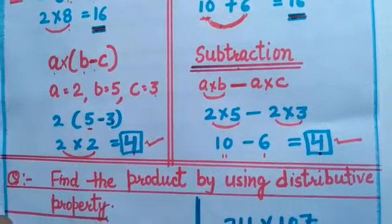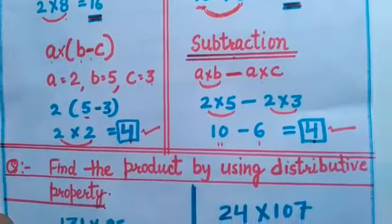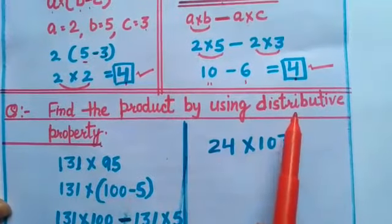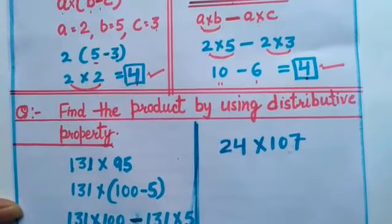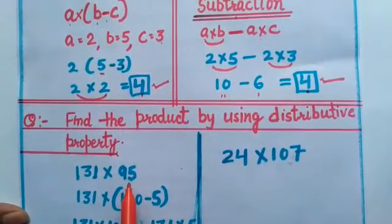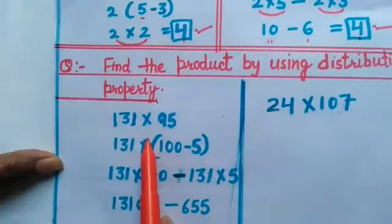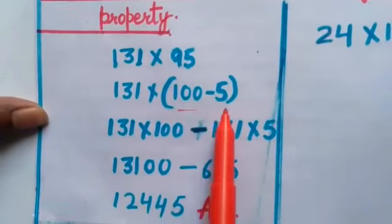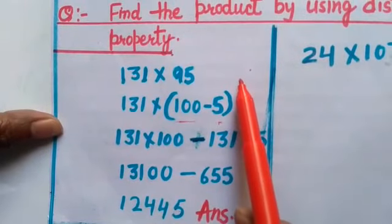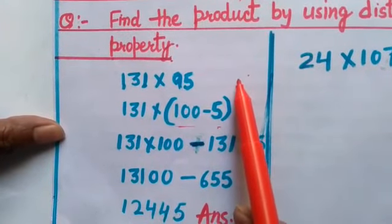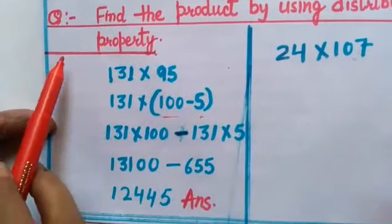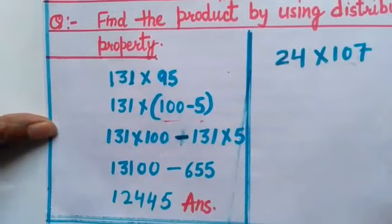Now we are solving sums based on this property. When we have large numbers, it becomes easier to multiply by distributing them, because we can simplify the calculation. To make it easy and simple, we use this distributive property method.